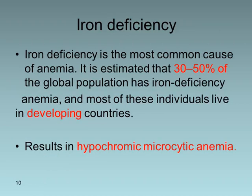Iron deficiency is the most common cause of anemia worldwide, estimated to affect 30 to 50 percent of the global population, with most of these individuals living in developing countries. It is the commonest type of hypochromic microcytic anemia.